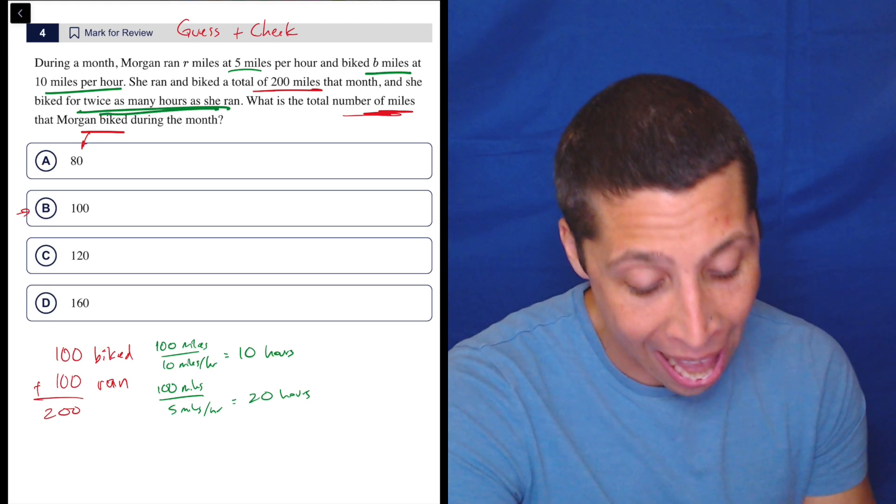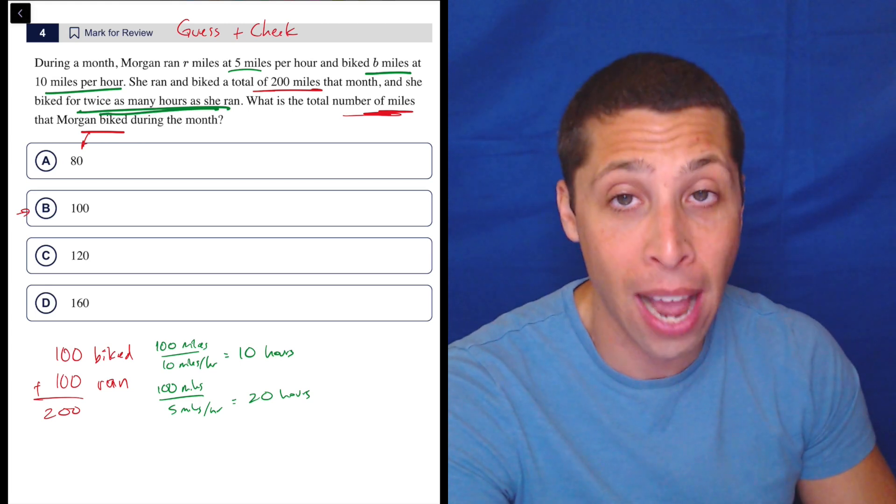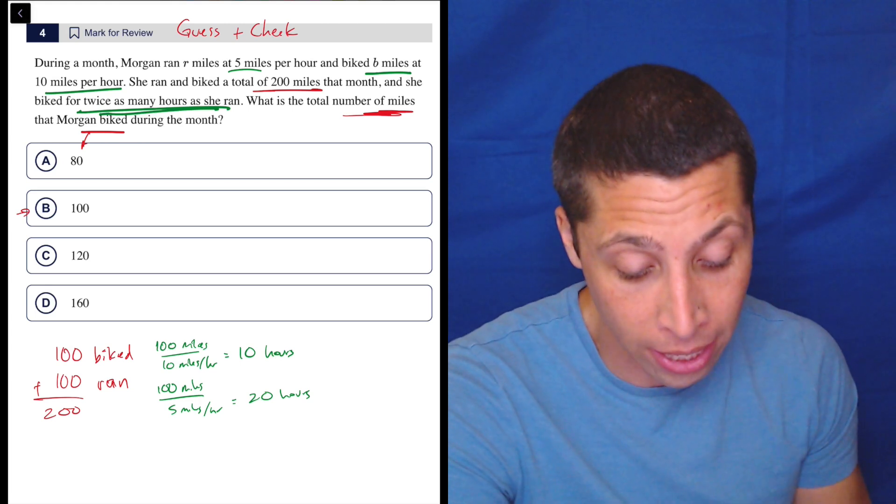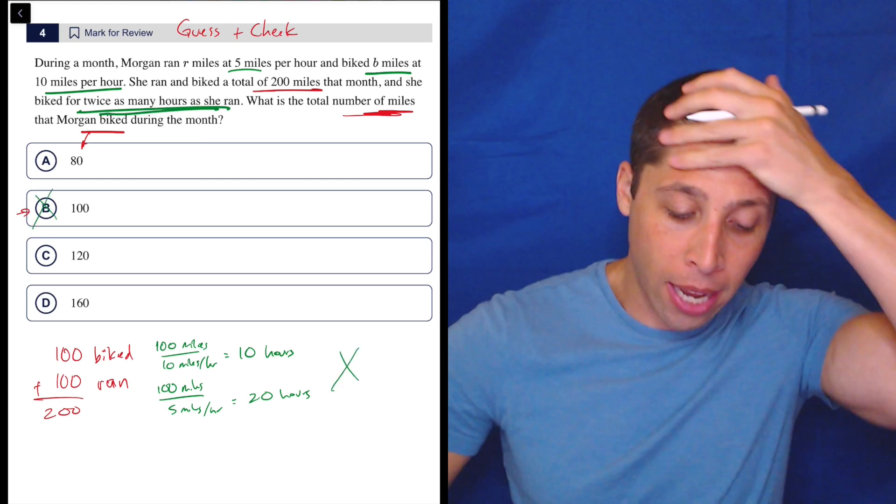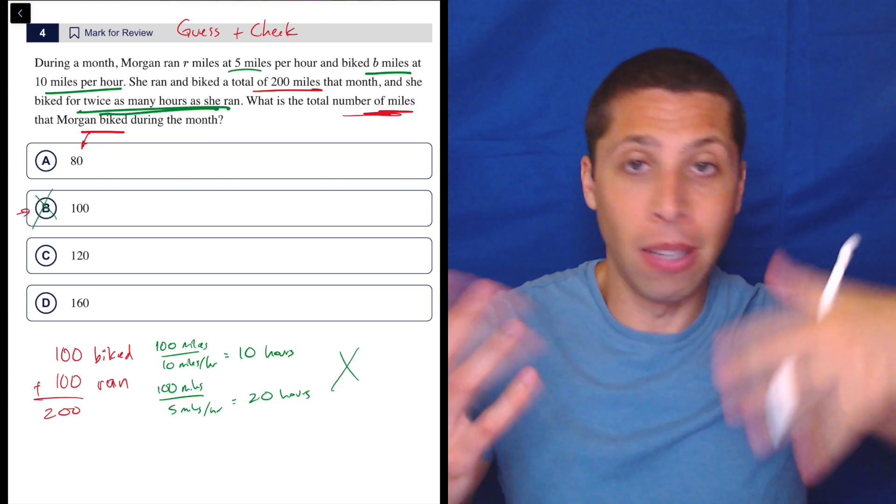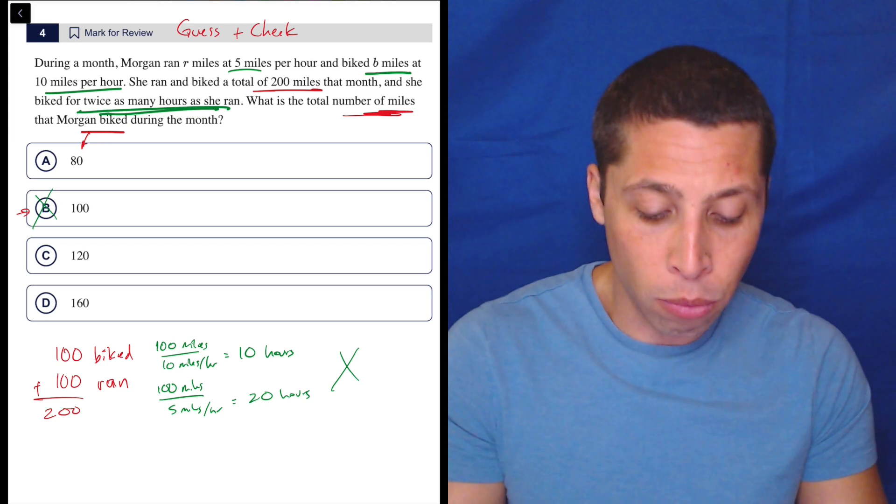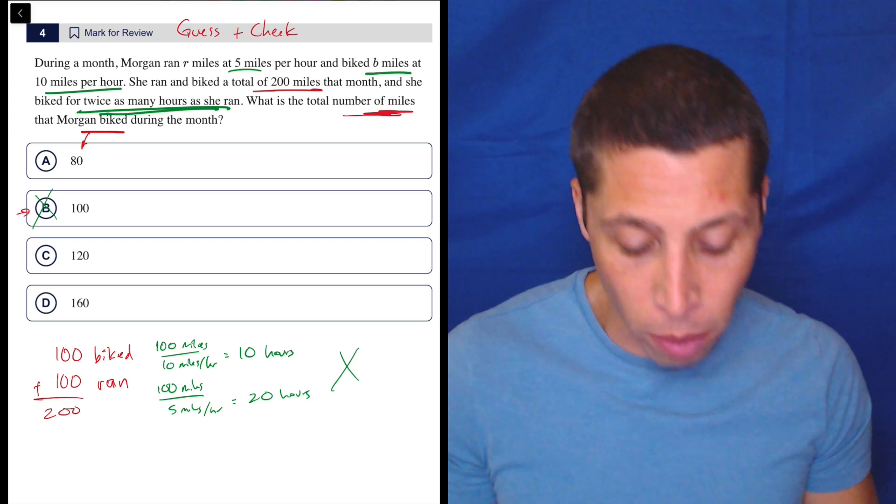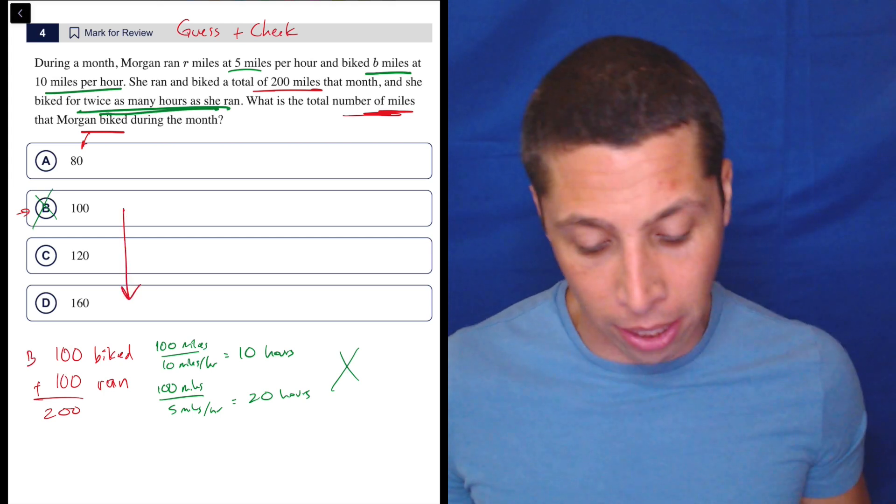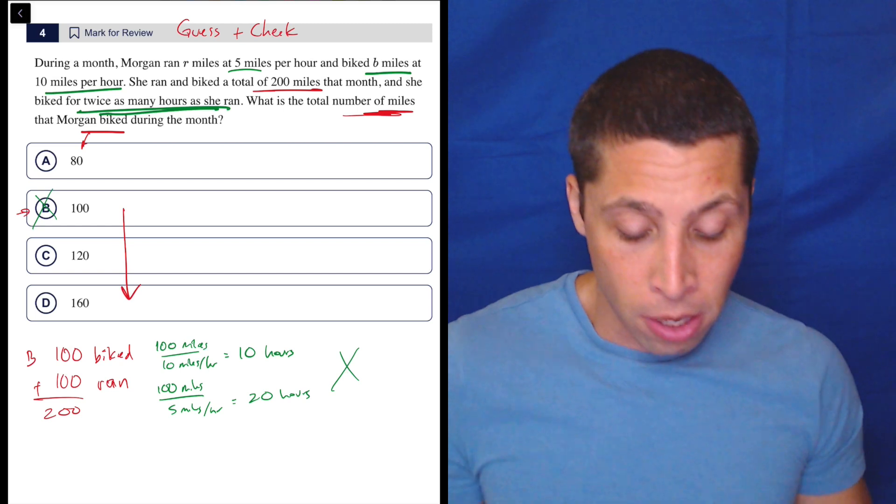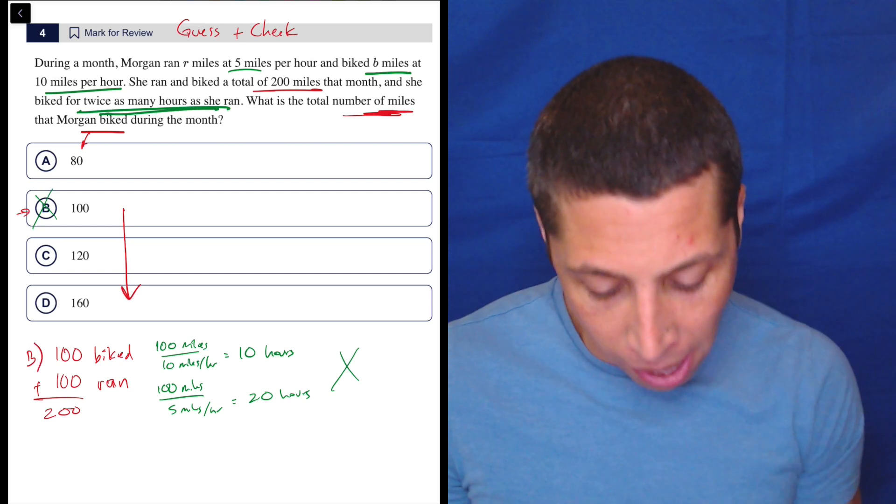So does that fit? She biked for twice as many hours as she ran? No, this is backwards. 10 is half of 20. We want to bike twice as much. So if she's biking for 10 hours, we would expect there to be running for five hours. So this is wrong. And now I think about how can I get to the answer? I want there to be much more biking. So why don't I go to one of these other choices? I could go to 120, I could go to 160. But the point is I want to go in this direction because I want there to be more biking. The more miles she biked, the more hours she biked.